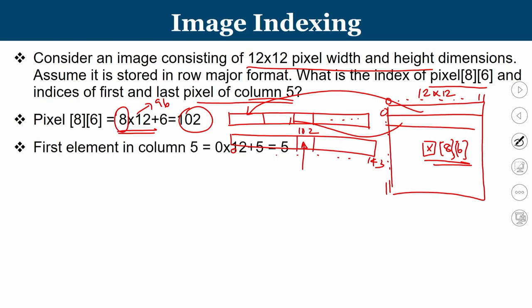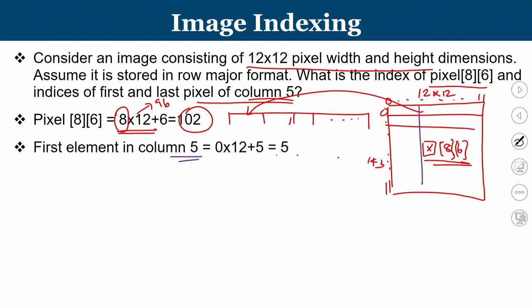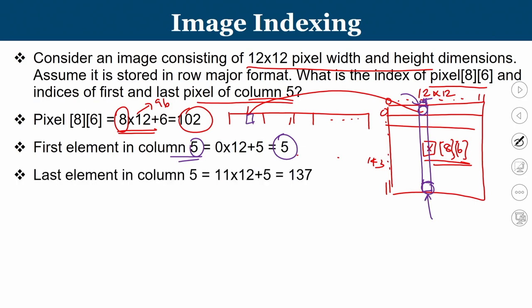Now for column number 5: the first element is in row 0, so its index is 0 × 12 + 5 = 5. That is location 5 in the linear array. For the last element of column 5, it is in row 11, so the index is 11 × 12 + 5 = 132 + 5 = 137. So in a 12 × 12 image stored linearly from 0 to 143, the first element of column 5 is at location 5 and the last element is at location 137.